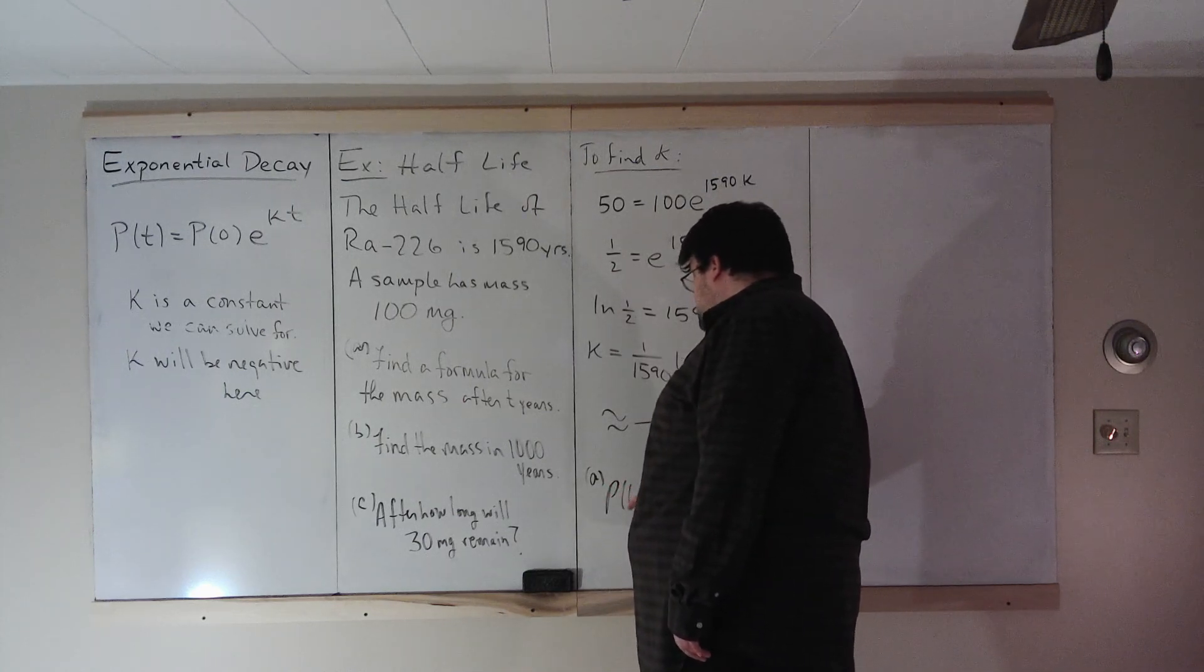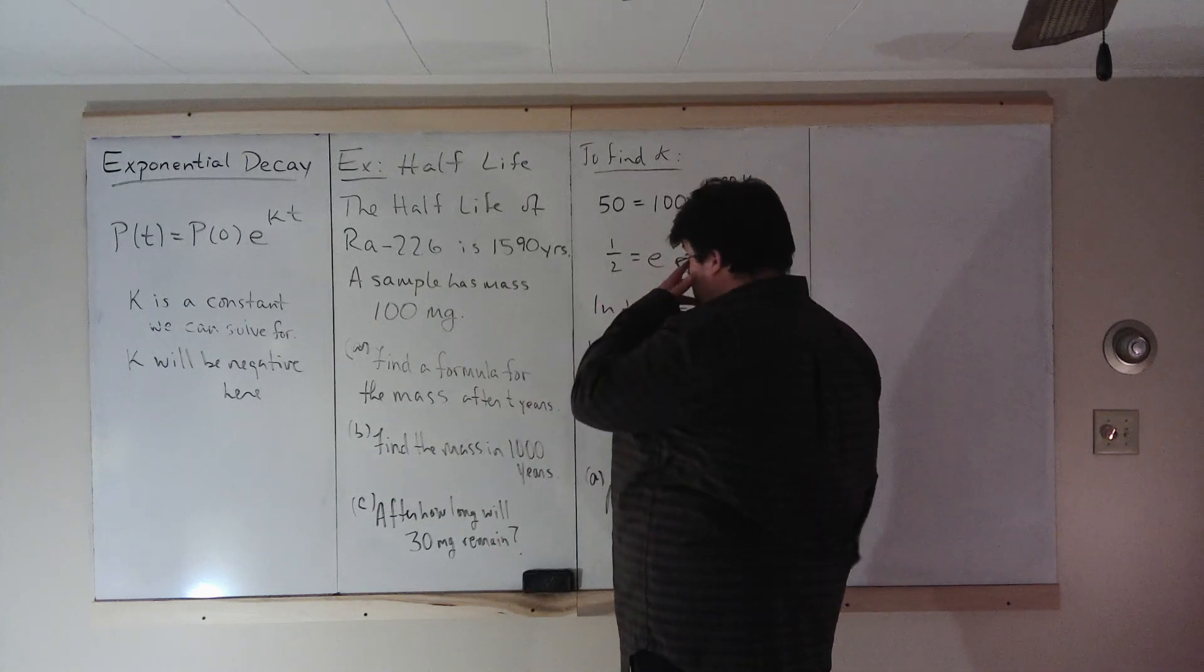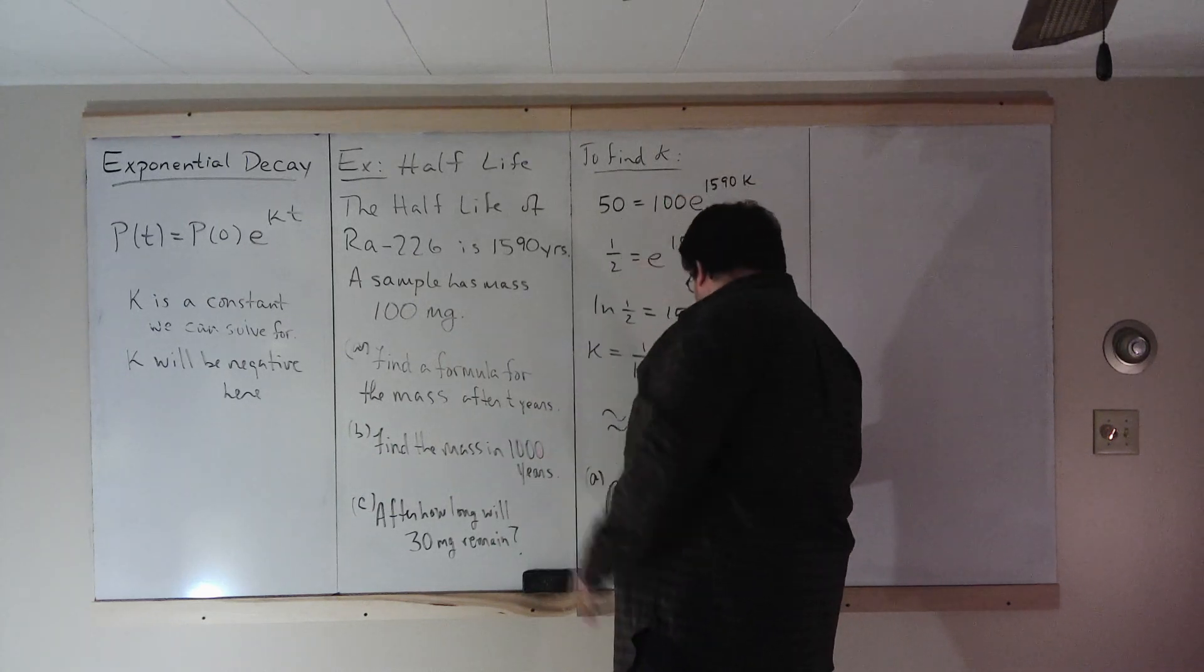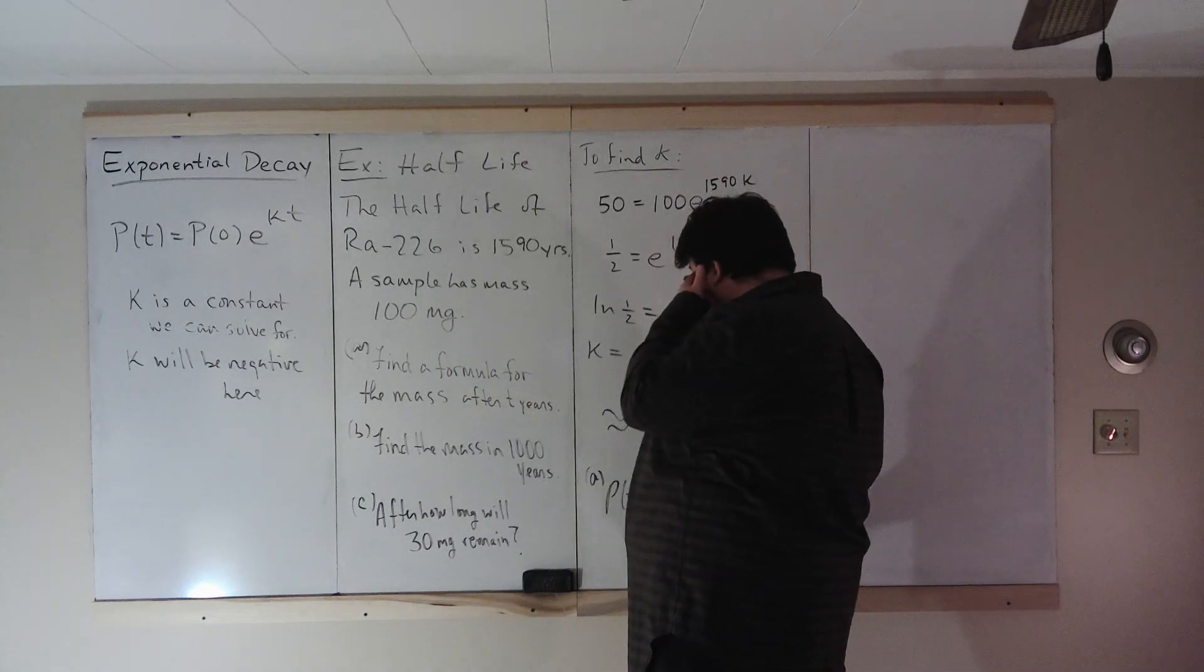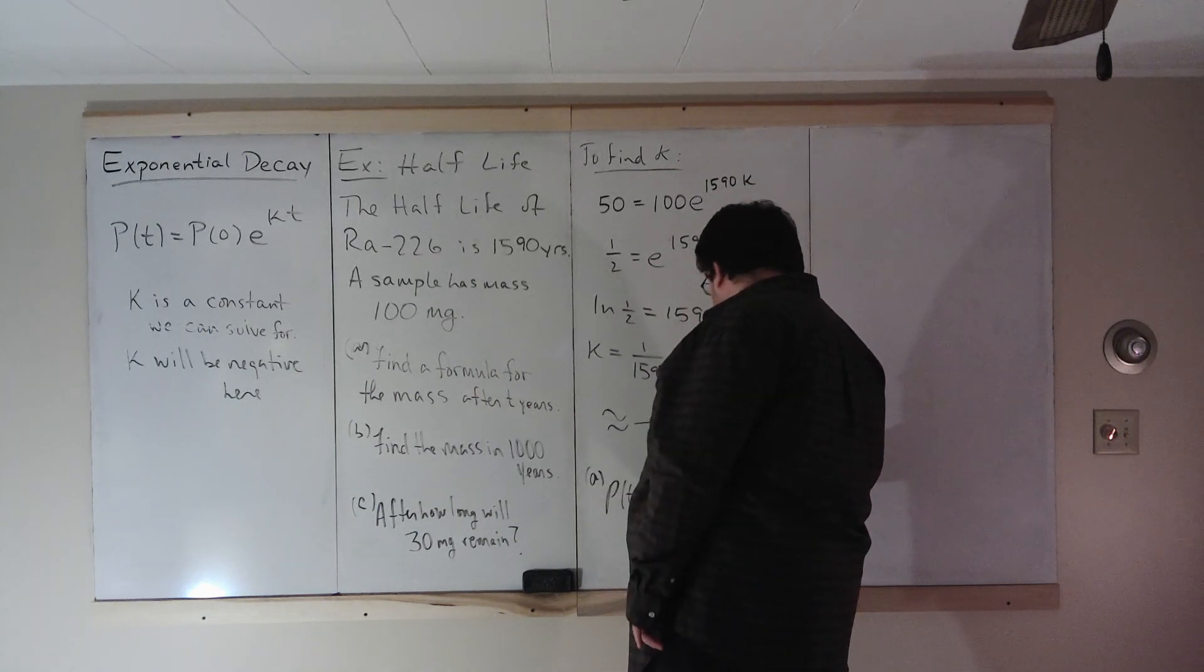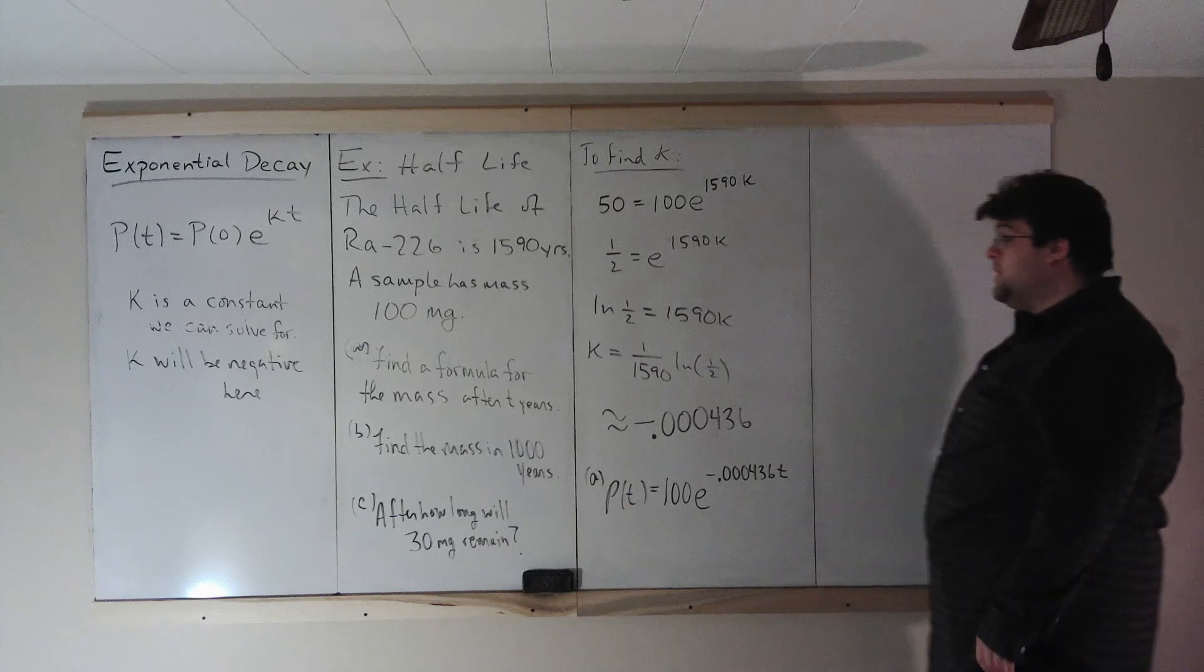So P(t) equals the initial amount, which is 100 times e to the negative 0.000436 times t.